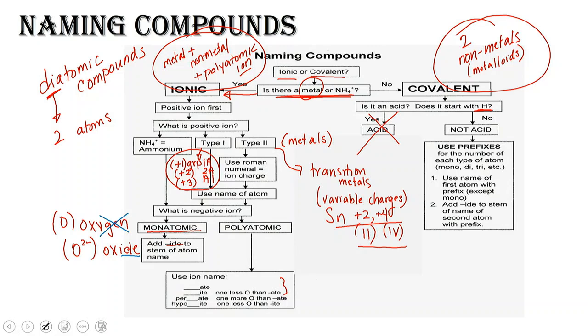So if it's not an acid and we just have two non-metals, we are going to use prefix numbers to indicate the number of atoms that are present in the formula. So depending on the number, we use mono, di, tri, tetra, penta, hexa, hepta, octa, nano, deca. I'm not going any further than that.